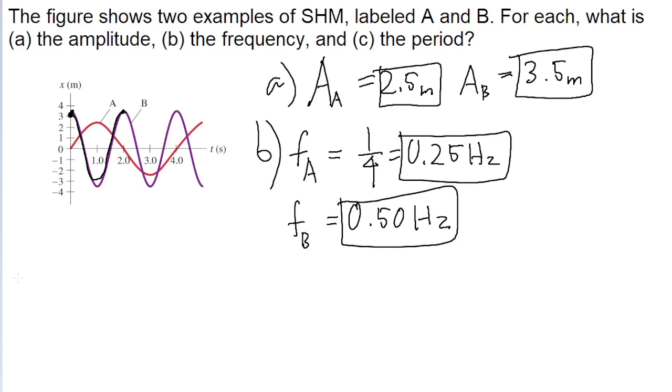Finally, part C asks for the period of both functions. Period is the opposite of frequency—it's the amount of time it takes for the function to complete one cycle. We basically already talked about this in part B.